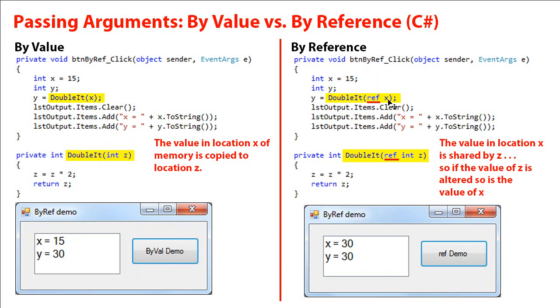The only thing I'm going to change to transfer it by reference is I'm going to add the word ref both when I'm passing it. So it's my argument. So I put ref in front of the argument. And I also put ref in front of the variable declaration as far as the parameter. And now when I pass x to z, I'm not passing the value. I'm passing the location of memory so that x and z share that same location.